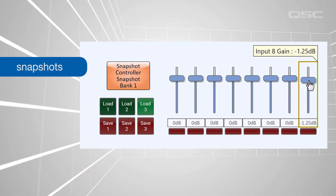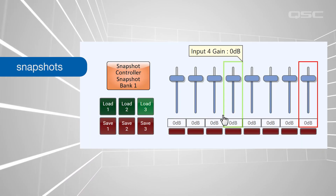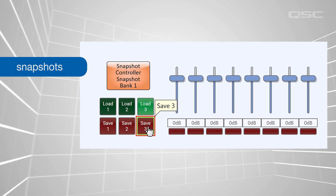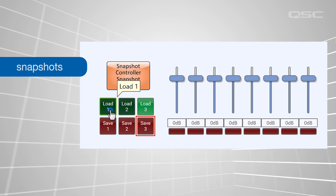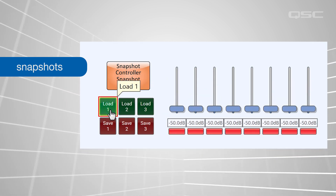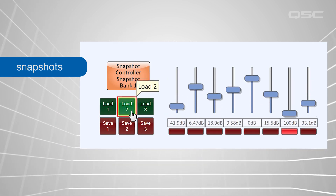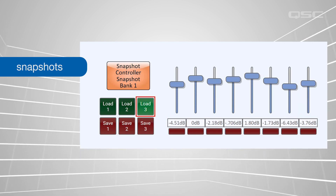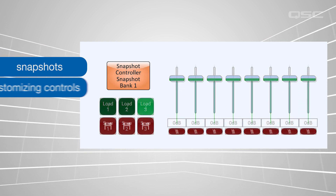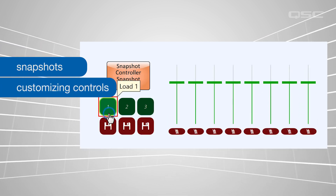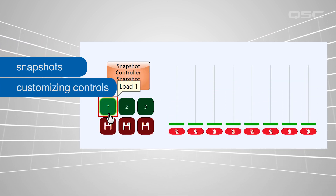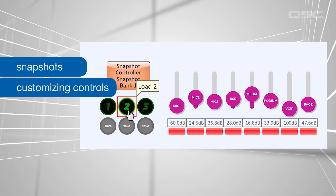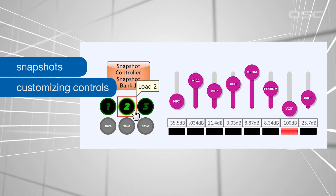We'll start with snapshots, which are used to record the state of one or more controls so you can recall the state with a single action, rather than readjusting every control manually. Then we'll take a look at how to customize the appearance and behavior of each individual control beyond its default properties in the control panel.